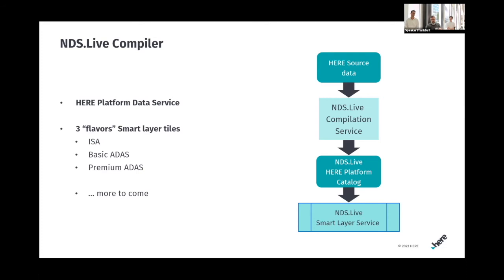What we provide with our service are basically three attribute layers: ISA, obviously; basic ADAS, where we talk about curvature and slopes; and then premium ADAS, which includes lane-level attributes, lane connectivity, traffic lights, and things like that. Over time we are going to add more, but that's what we deliver at this point.